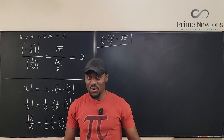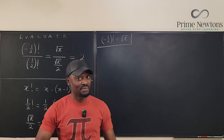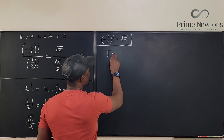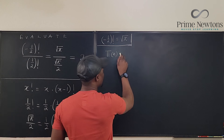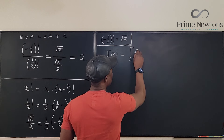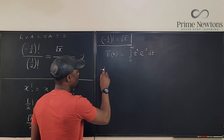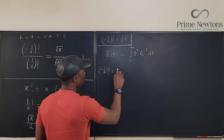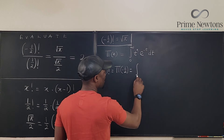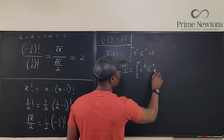Now let's show the real, legal way. I'll use the gamma function — or the shifted gamma function, which I call the pi function — because it's more direct. Recall the definition: the pi function is defined as π(x) equals the integral from 0 to infinity of t^x times e^(−t) dt. So (−1/2)! equals π(−1/2), which is the integral from 0 to infinity of t^(−1/2) times e^(−t) dt.